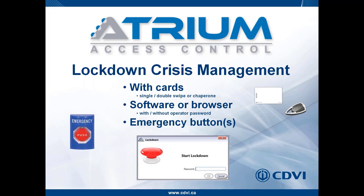Using cards, you pick and choose which cards have the capability to start and stop lockdown. You can configure whether it requires a single swipe at a particular reader, a single swipe at any reader, a double swipe, or two people (chaperone option). Through the Atrium software or web browser, you can activate or deactivate — start or stop — the lockdown scenario.